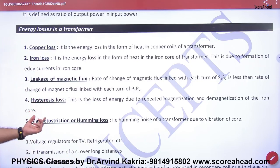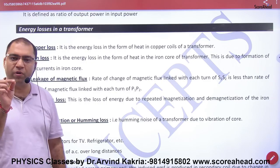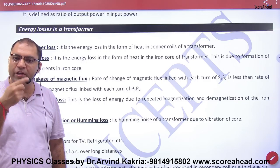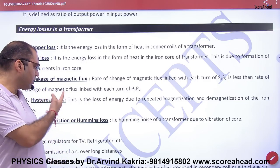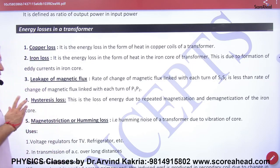The next loss is magnetostriction, also called humming noise — that is the noise produced by the transformer. This noise is called humming loss, or magnetostriction loss. These are the energy losses of a transformer.